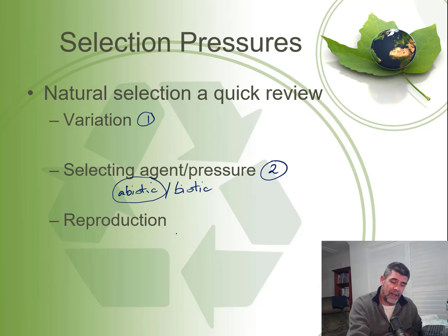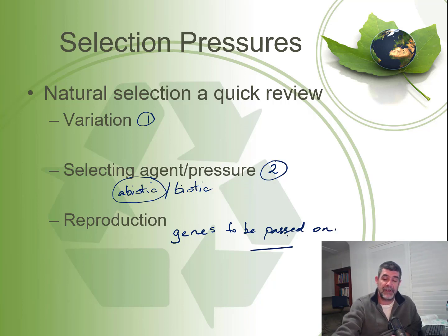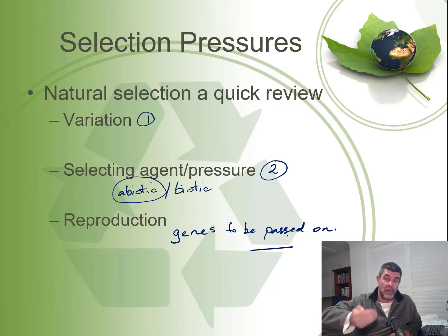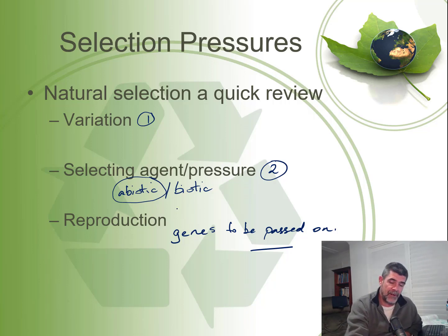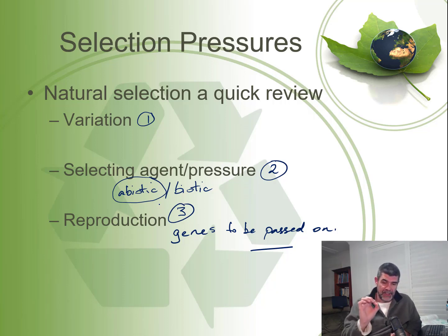If something selects some individuals as better suited than others, those individuals need to be able to pass their genes on. Individuals that are better suited in the environment pass that advantage on into the next generation, and so their genes slowly become more common within the gene pool — they start to dominate. So the three key parts of Darwin's theory are: variation, the selecting agent, and reproduction.